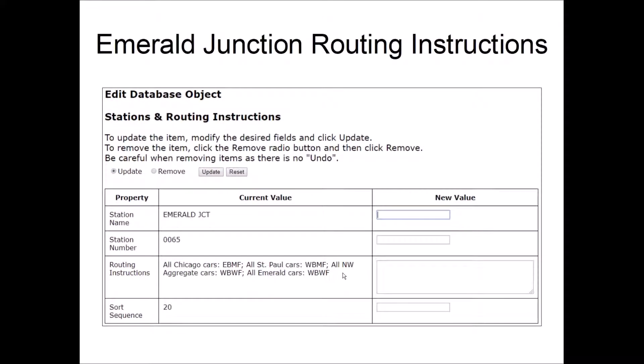Emerald Junction routing instructions are a little more complex. They say that all Chicago cars, any car going to a Chicago customer will be handled by the eastbound manifest freight. Any cars going to the St. Paul customers will be handled by the westbound manifest freight.